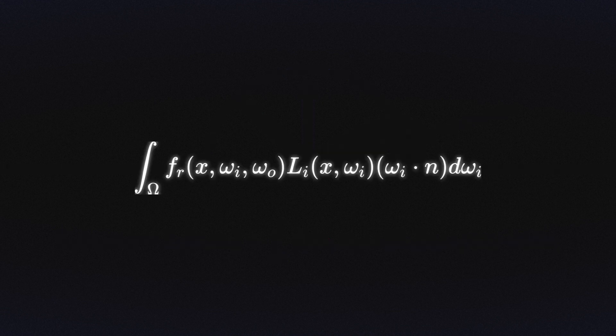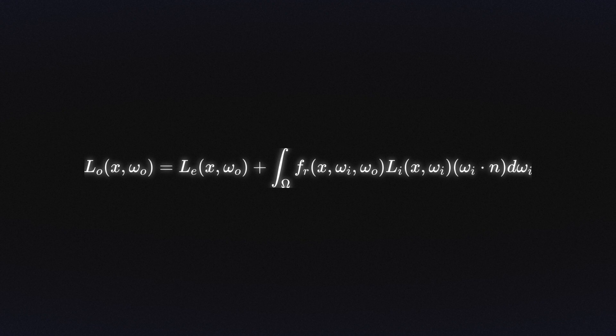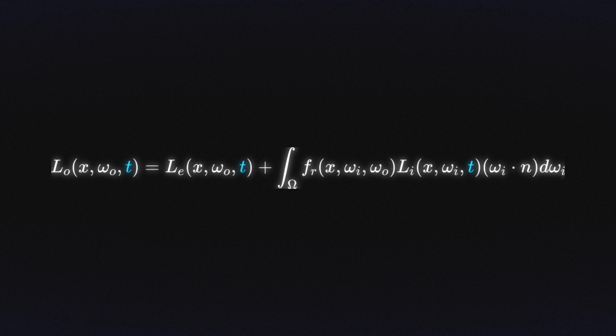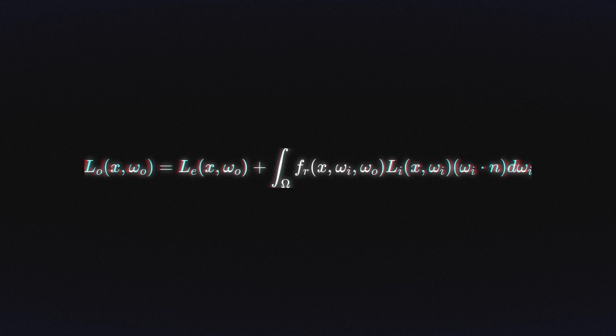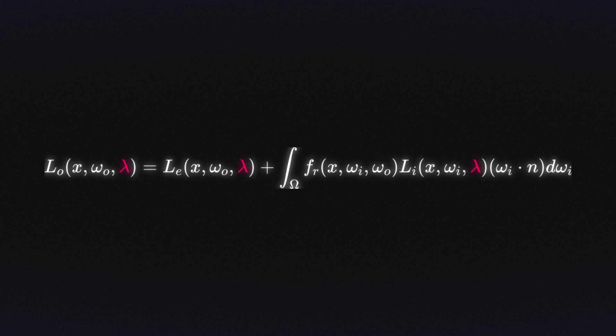The integral is the scariest part, but it is much simpler than it seems if you just remember that an integral is a continuous sum. This is the continuous sum of the incoming light for each direction with respect to every incoming direction of the hemisphere. This is a relatively simple form of the equation, which can be extended to allow for effects such as motion blur by giving each ray a time and adding the time as a parameter to the functions, or even to allow for light dispersion by giving each ray a wavelength.